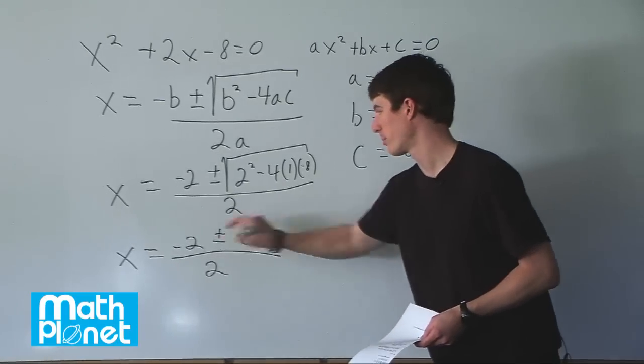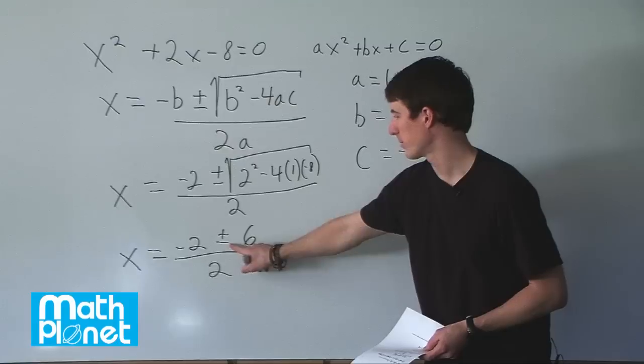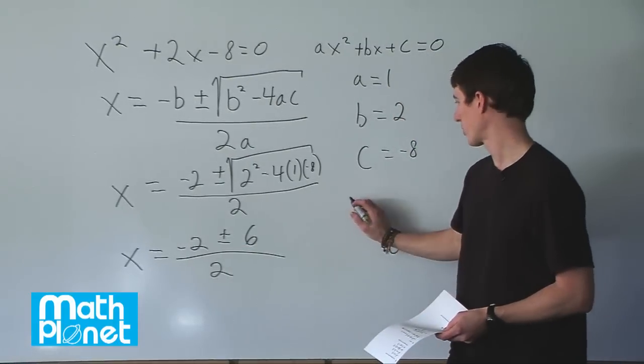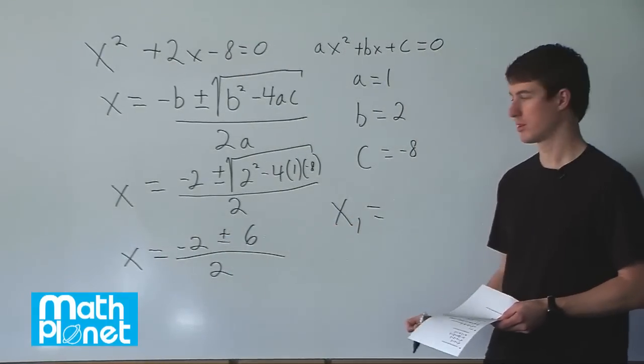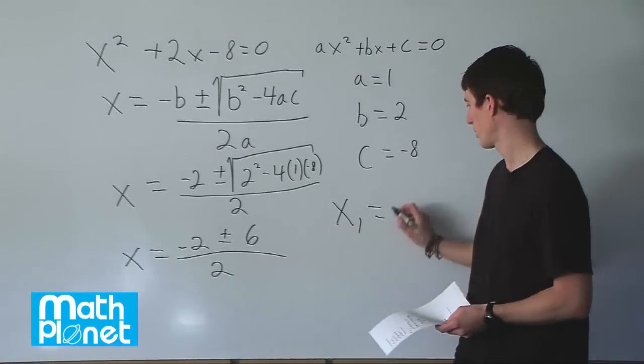So the first one is the plus term, the second one is the minus term. So the first term, we can say x1 equals negative 2 plus 6, so that's positive 4 over 2, which is 2.